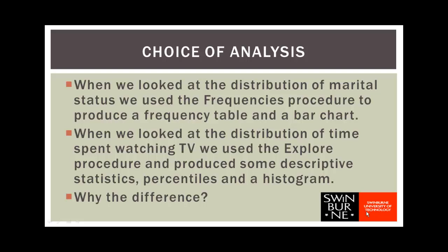Hi everyone. Welcome back to Part 2 of the Week 2 Lecture. In the first part, when we looked at the distribution of marital status, we used the frequencies procedure and produced a frequency table and a bar chart. But when we looked at the distribution of time spent watching TV, we used the explore procedure and produced some descriptive statistics, percentiles and a histogram. So why the difference? Why did we use one procedure for one variable and a different procedure for the other?